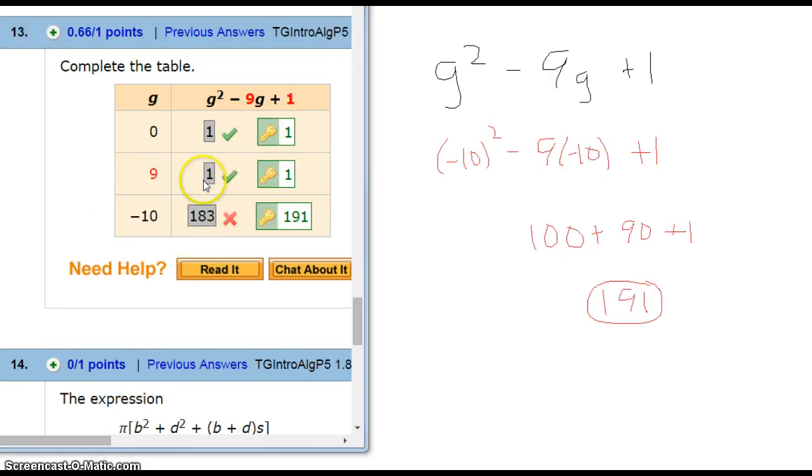For this one, the idea is to plug negative 10 in everywhere you see a G - replace the letter with the number. So I've done that over here. When you do negative 10 times 9, you get negative 90. Minus negative 90 ends up being plus 90. So all together, you'll have 100 plus 90, which equals 191.